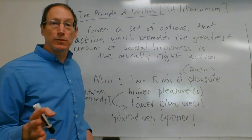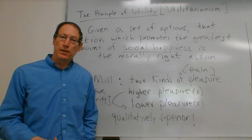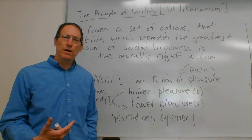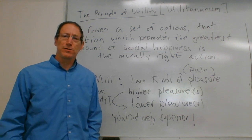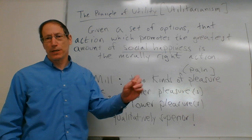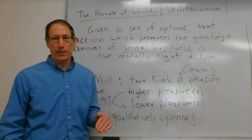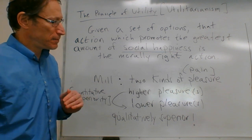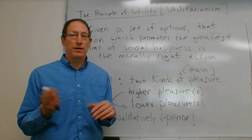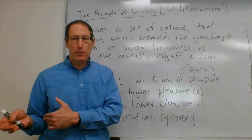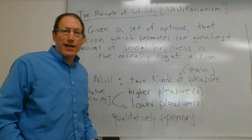We should reflect on whether mental pleasures are truly higher than physical pleasures. Are they always preferable? Mill seems to claim that at any moment when you have a choice between a physical and a mental pleasure, you would prefer the mental. Many people would object that this is not really true — there are times when people prefer a physical pleasure over a mental one.